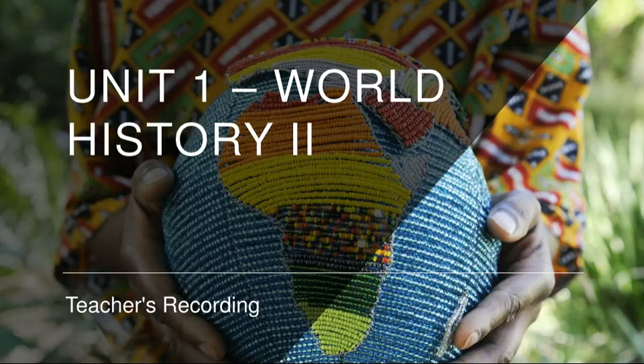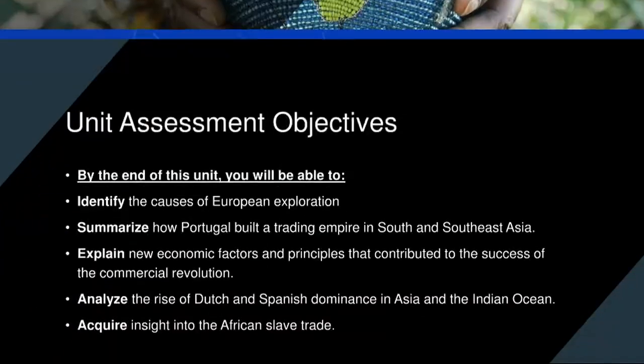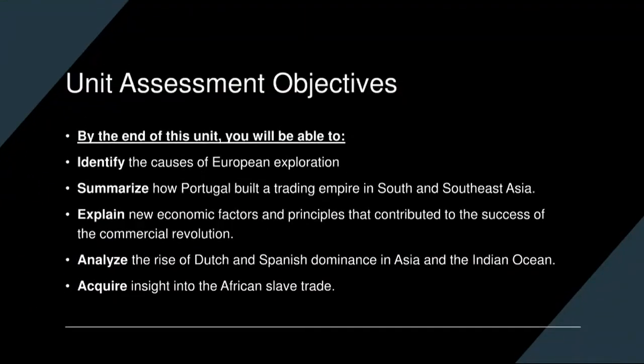This is the teacher's recording of Unit 1, World History 2. In this unit, our objectives will be: being able to identify the causes of European exploration, summarizing how Portugal built a trading empire in south and southeast Asia, explaining new economic factors and principles that contributed to the success of the commercial revolution, analyzing the rise of Dutch and Spanish dominance in Asia and the Indian Ocean, as well as acquiring insight into the African slave trade.